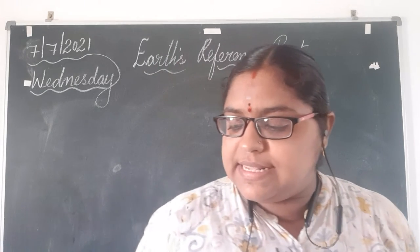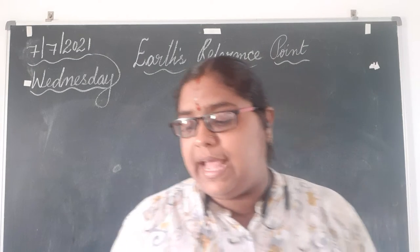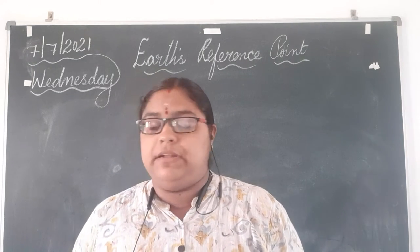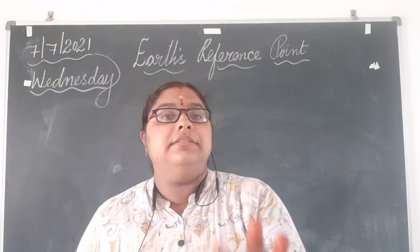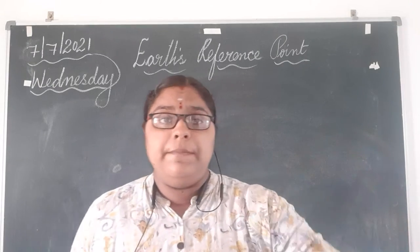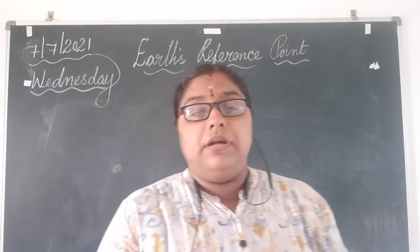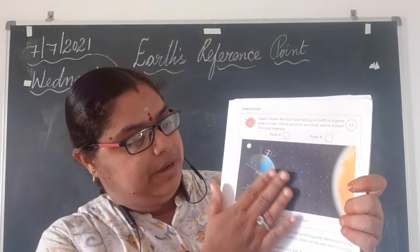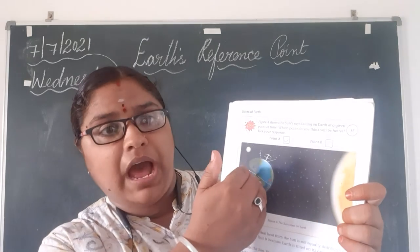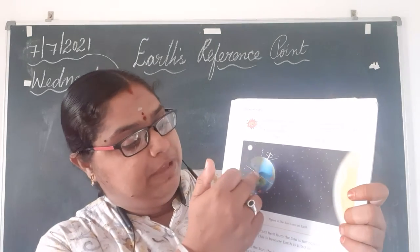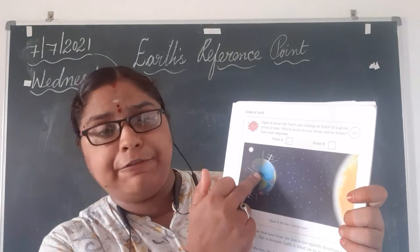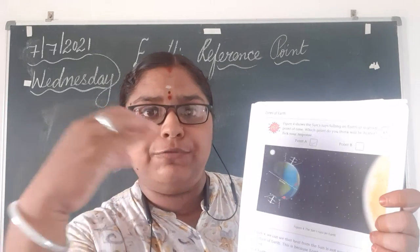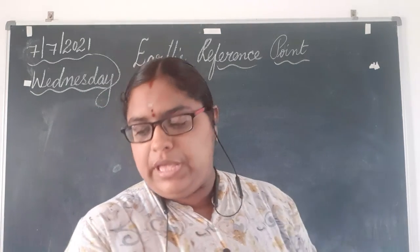The sun's rays do not fall directly as we go away from the equator. This is the equator. If we go far from the equator, the sun's light does not fall directly.